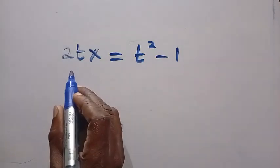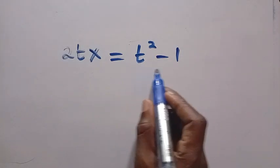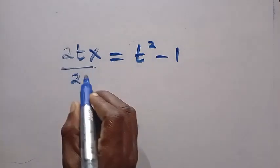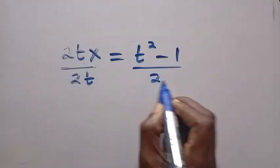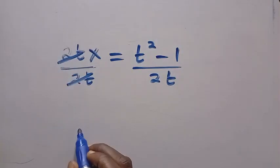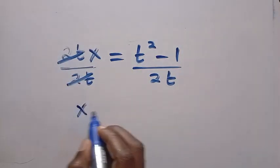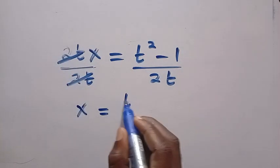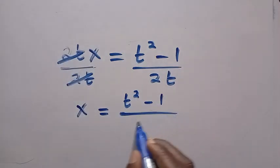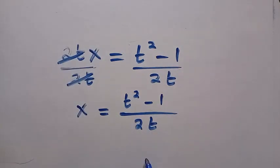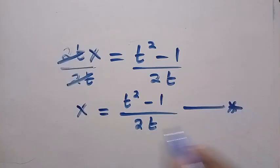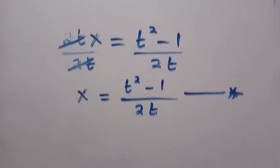We have 2tx equals t squared minus 1. Let's divide both sides by 2t. This 2t cancels with 2t, and we have x equals t squared minus 1 divided by 2t. This is what we have by making x the subject of the relation.